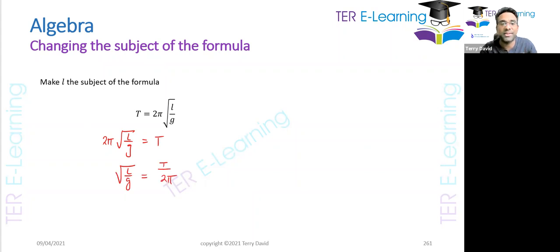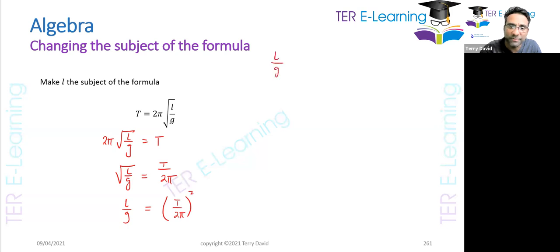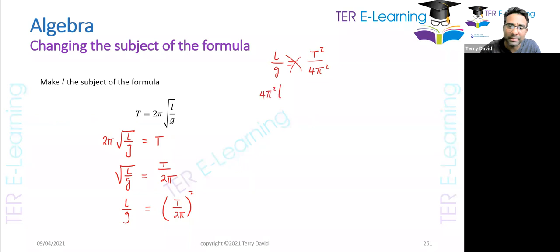To get rid of the square root sign we must square both sides of the equation. When you square a square root the sign disappears, so the left side becomes l over g. On the right hand side, squaring t over two pi gives t squared over four pi squared — a common mistake is forgetting to square everything inside the brackets. Next, cross multiply to get four pi squared l equals g t squared, so l is equal to g t squared divided by four pi squared.